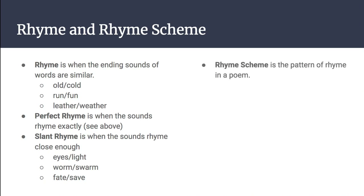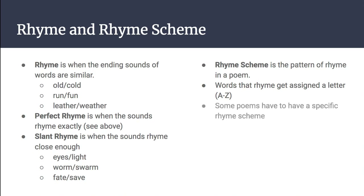Rhyme scheme is the pattern of rhyme in a poem, and each rhyme gets assigned a letter. So if the rhyme is old, cold, mold, bold, foretold — they would all be A. Some poems have to have a specific rhyme scheme. If you're reading a Shakespearean sonnet, the rhyme scheme will always be A-B-A-B-C-D-C-D-E-F-E-F-G-G. A ballad usually goes A-B-A-B-C-B-C-B.